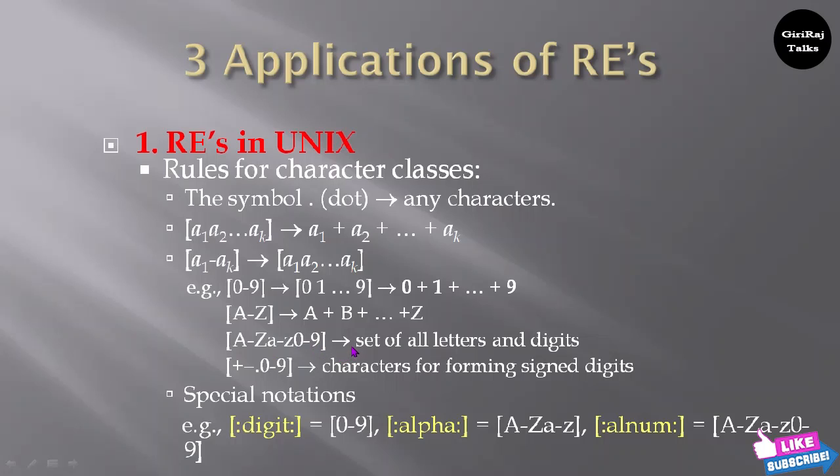gives the set of all letters and digits. In the next example, plus minus dot [0-9] derives characters for forming signed digits.